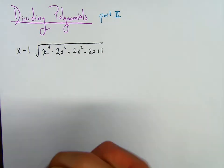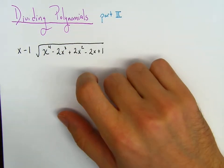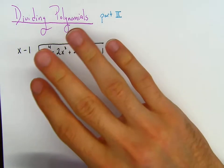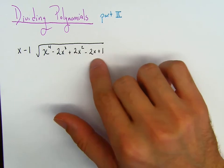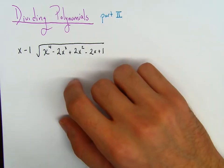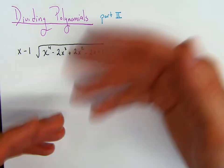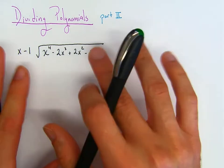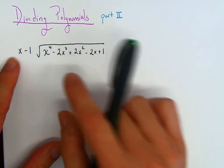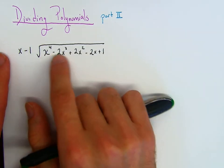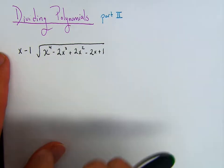Welcome back. Let's complete our lesson of dividing polynomials, part two. In the previous example, we looked at polynomials where all the signs were positive. Here, we'll switch it up and have some signs that are negative. We'll see how we divide these polynomials. What would be the first question we ask ourselves if we wanted to divide x to the fourth minus 2x cubed plus 2x squared minus 2x plus 1, divided by x minus 1?